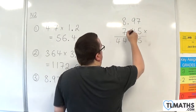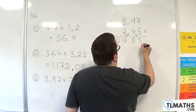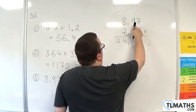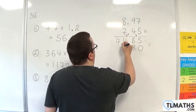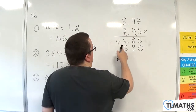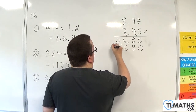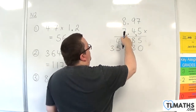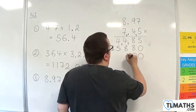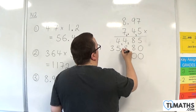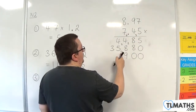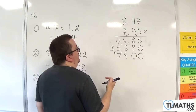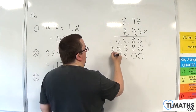Ignoring decimal points, we're now multiplying by 40. So put in a 0. 4 sevens are 28. Put in the 8, carry the 2. 4 nines are 36, plus the 2 is 38. Put in the 8, carry the 3. 4 eights are 32, add on the 3 is 35. Put in the 5, carry the 3. Still ignoring the decimal points, we're now multiplying by 700, so put in two 0s. 7 sevens are 49. Put in the 9, carry the 4. 7 nines are 63, add on the 4 is 67. Put in the 7, carry the 6. 7 eights are 56, add on the 6 is 62. Put in the 2, carry the 6.